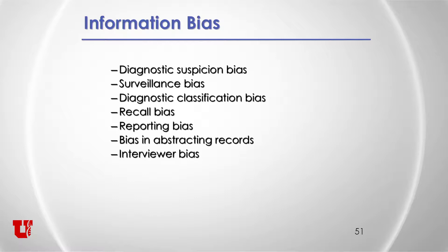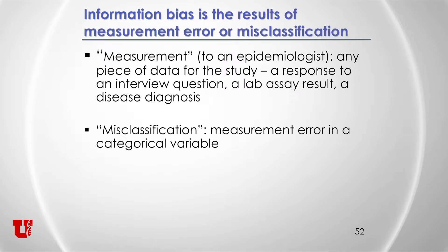We had selection bias, which is about who are the participants in your study — about whom you have data. Information bias: you have those participants. What data do you have? What is the quality of those variables that you have measured about those study participants? Information bias is the result of measurement error or misclassification.